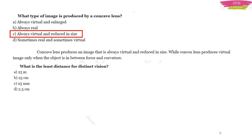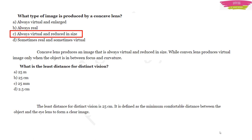Question: What is the least distance for distinct vision? This is the minimum comfortable distance between an object and the eye lens to form a clear image. For example, when reading a book you must hold it at least 25 centimeters away — closer than that and letters appear blurred. The answer is 25 centimeter — option B.